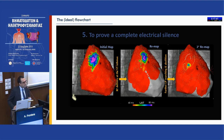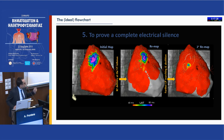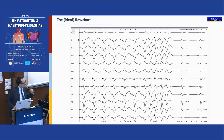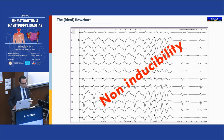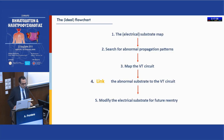On the left is the first map — you see there is quite a large area of late potentials. Then we ablated and did a remap; there is still some area of late potential. We ablated more, and the last panel shows almost complete abolition of late potentials. We should always reach this kind of abolition, and I will show you the reason later. At the end of the procedure, what you want is non-inducibility — the patient should not be inducible anymore.